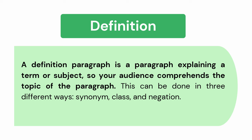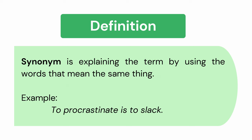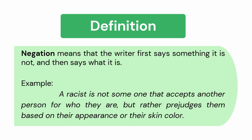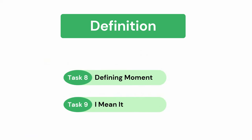A definition paragraph explains a term or subject so your audience comprehends the topic. This can be done in three ways: synonym, class, and negation. Synonym is explaining the term by using words that mean the same thing — for example, to procrastinate is to slack. Class is when you put your topic in a larger category — for example, a pineapple is a tropical fruit that has an acidic and sweet taste. Negation means the writer first says something it is not and then says what it is — a racist is not someone that accepts another person for who they are, but rather prejudges them based on appearance or skin color. For definition, you need to answer Task 8, Defining Moment, and Task 9, I Mean It.